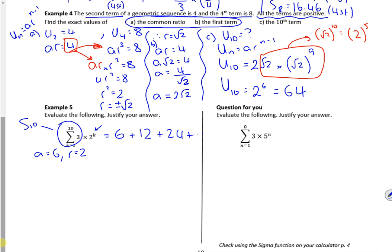This one's the sum of the first ten terms. Because it's going from one to ten. So r is two, so I'm going to use r to the n minus one. The sum of the first ten terms is, check the time, the sum of the first ten terms is 6138. There's a question for you here.